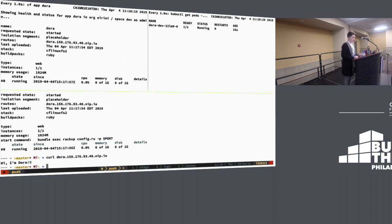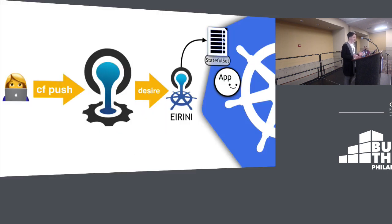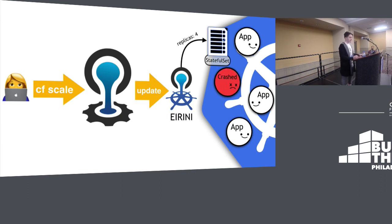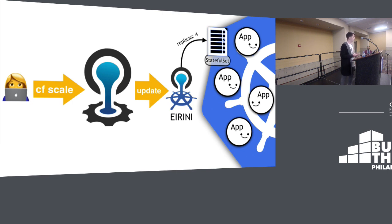At this point it's easy to use Kubernetes features to implement Cloud Foundry features. For example, if you do a CF scale, the cloud controller sends an update request to Irini. All Irini has to do is change the replicas field of that stateful set to four, and it's up to Kubernetes on its own time to schedule those instances. If one crashes or dies, it's Kubernetes' job to bring it back up. This way we can reuse features like CPU/memory limits, readiness checks, and health checks to reach parity with Diego.